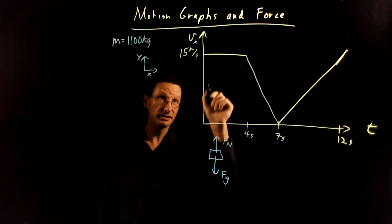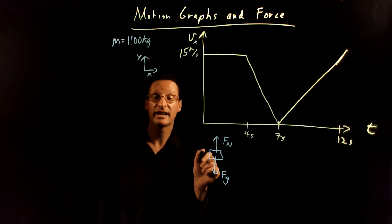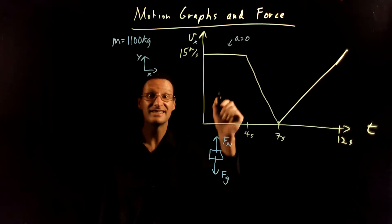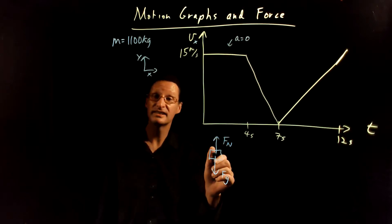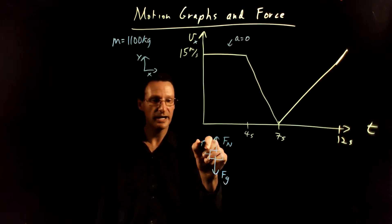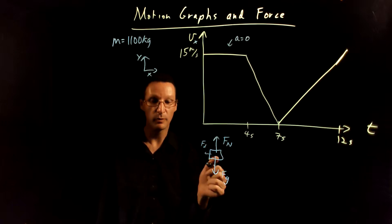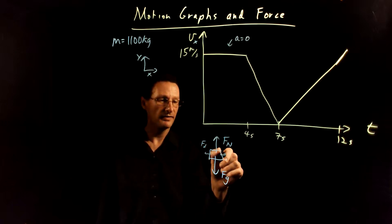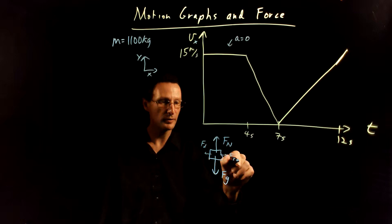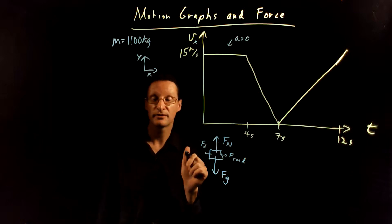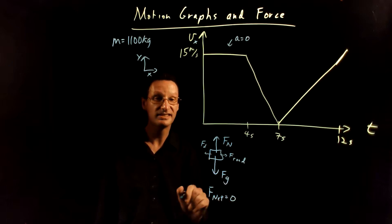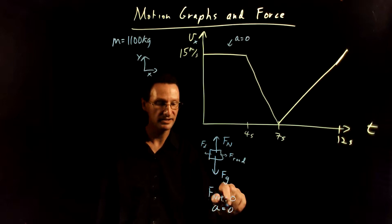Remember that the slope of the velocity-time graph is the value of the acceleration. The slope here is 0, so that means the acceleration here is 0. If the acceleration is 0, that means the net force in the x direction must also be 0. If there's a small drag force from the wind, the driver has to have their foot on the gas, and there's a small frictional force from the road propelling them forward to overcome the drag force. The overall net force is 0 because acceleration is 0.